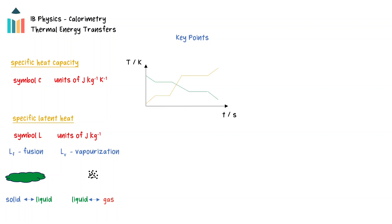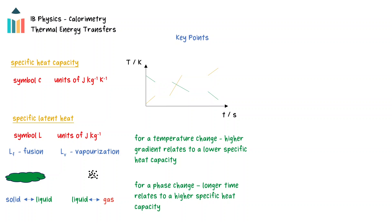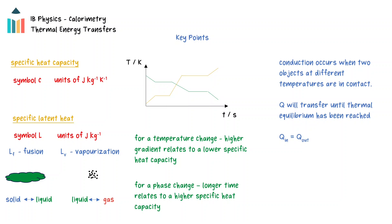On a heating or cooling curve, the gradient of the line is inversely related to the specific heat capacity — higher specific heat capacities will have lower gradients. The time period that a phase change occurs in is dependent on the specific latent heat; a higher specific latent heat results in a longer time period on the graph. When two objects at different temperatures are in contact, thermal energy transfers from the higher to the lower temperature until thermal equilibrium is reached, possibly resulting in a phase change. Energy must be conserved, and the formulas q equals mc delta T and q equals mL can be used to solve these problems.